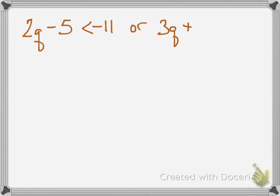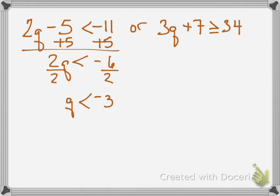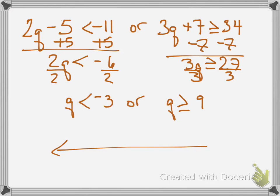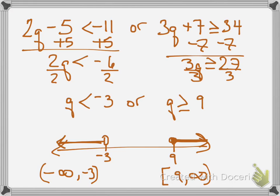Here's another problem. Again, notice how these are almost like two separate problems, but I join them on the same number line. On the left one, I add 5, then divide by 2, so I have q < -3. Or, it could be subtract 7, divide by 3 to get q ≥ 9. I can also show this through interval notation, but this one's a little bit longer because you've got one side going to negative infinity to -3, and the other one going from 9 to positive infinity.